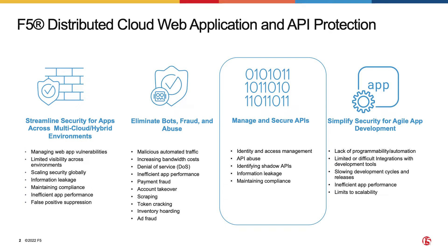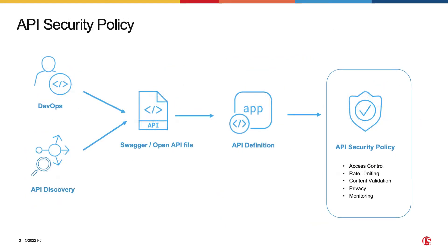Let's look at some API security challenges and how Distributed Cloud API Security can help. When we think about the critical functions API security has to perform, most often we think of access control, rate limiting, privacy, content validation, and monitoring. One critical aspect often overlooked is API discovery.